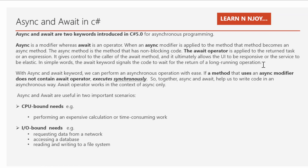The await keyword ultimately allows the UI to be responsive or the service to be elastic. In simple words, the await keyword signals the code to wait for the return of a long-running operation. If a method that uses an async modifier does not contain the await operator, it is going to be executed synchronously. Together, async and await help us write code in an asynchronous way. The await operator works only in the context of an async method.